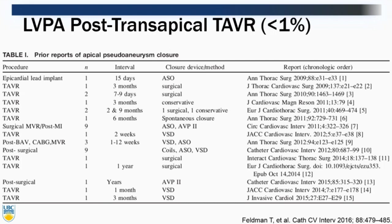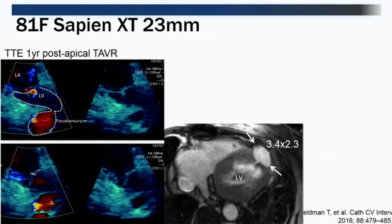Regarding trans-apical TAVR, the incidence of pseudoaneurysm is less than 1%, and the first surgical repair was reported in 2009. Among reported series, the majority are closed surgically with a few managed conservatively. There are three case reports of using VSD closure devices for trans-apical TAVR pseudoaneurysms.